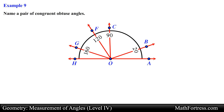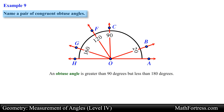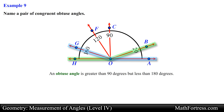Name a pair of congruent obtuse angles. An obtuse angle is greater than 90 degrees but less than 180 degrees. Looking at the figure, angle HOB and angle GOA both measure 160 degrees. So these angles are congruent obtuse angles.